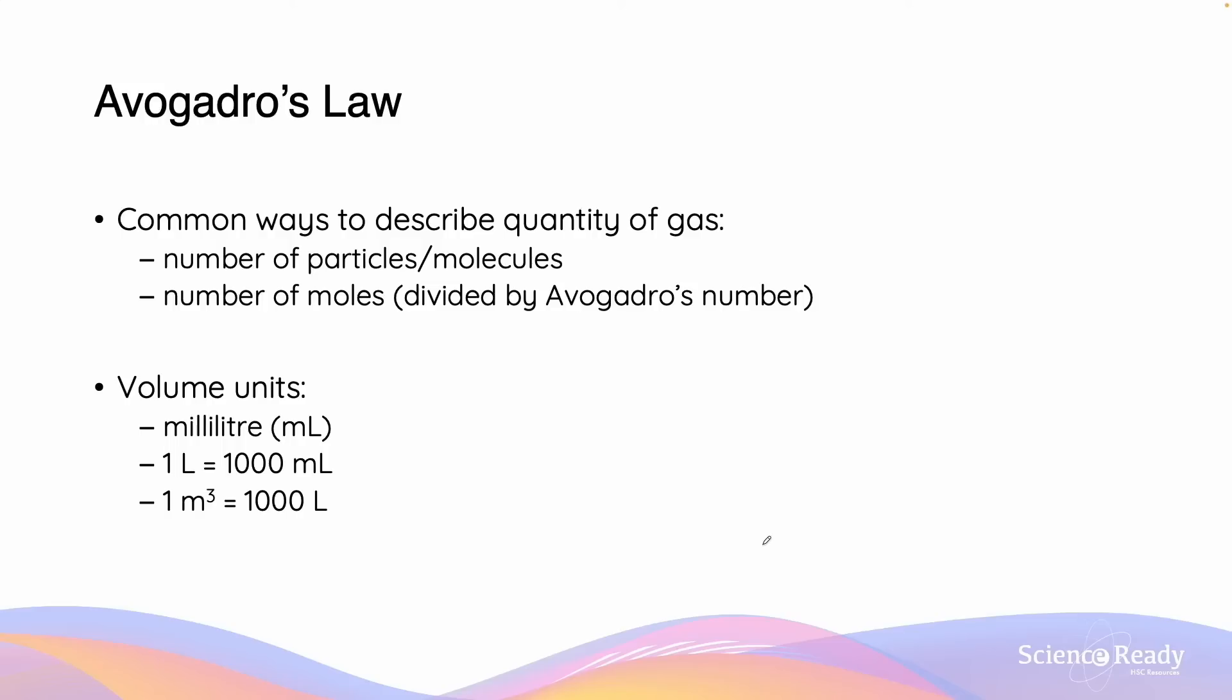In the ideal gas law equation, N describes the quantity of gas. Quantity can be measured in particles or in molecules which would then be converted into number of moles by dividing it by Avogadro's number. V refers to volume and is measured in a variety of different units. It can be measured in milliliters, in liters where one liter equals to 1000 milliliters or in meters cubed where one meter cubed is equal to 1000 liters.